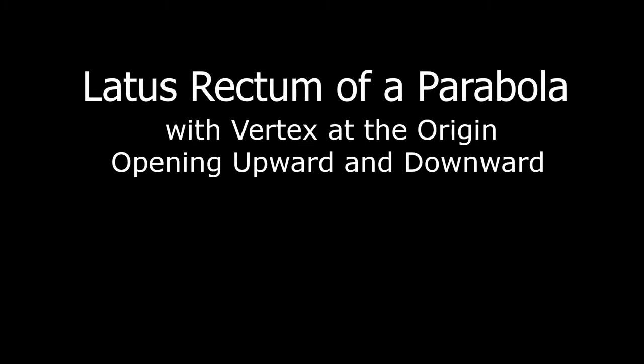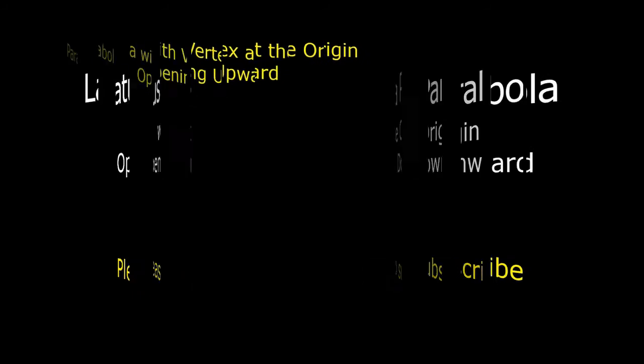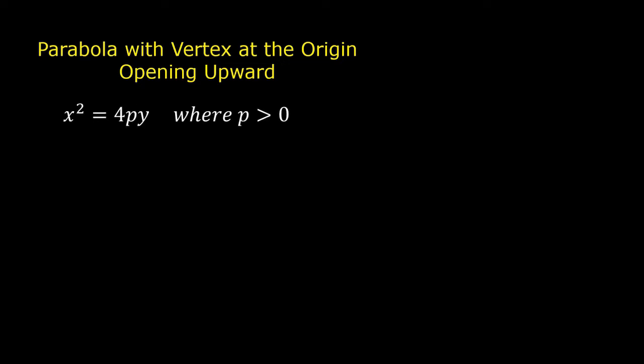Today's lesson is the latus rectum of a parabola with the vertex at the origin opening upward and downward. The equation of a parabola with the vertex at the origin and opening upward is in the form x squared is equal to 4py, where p is greater than zero.